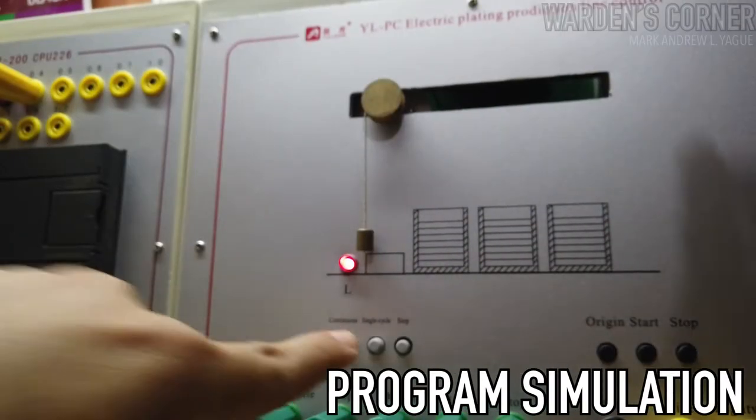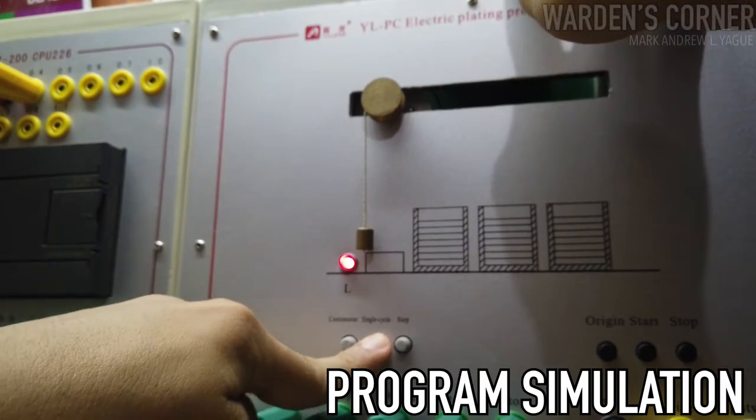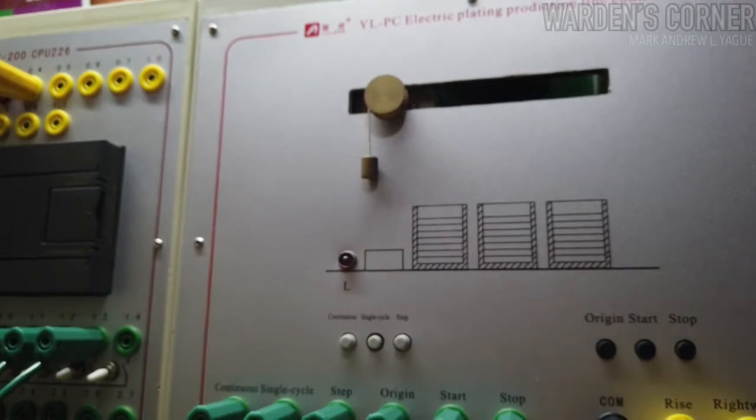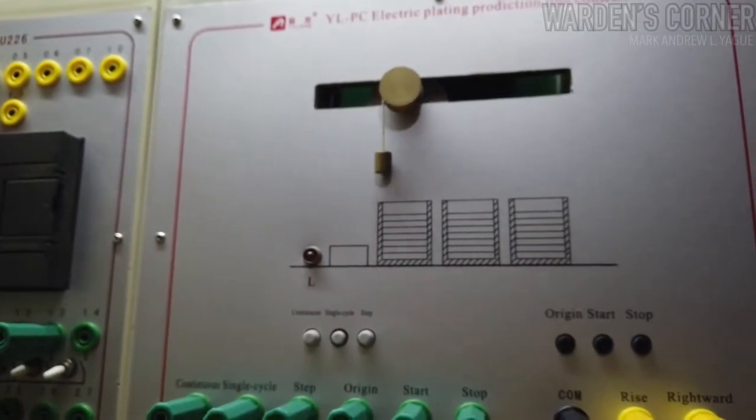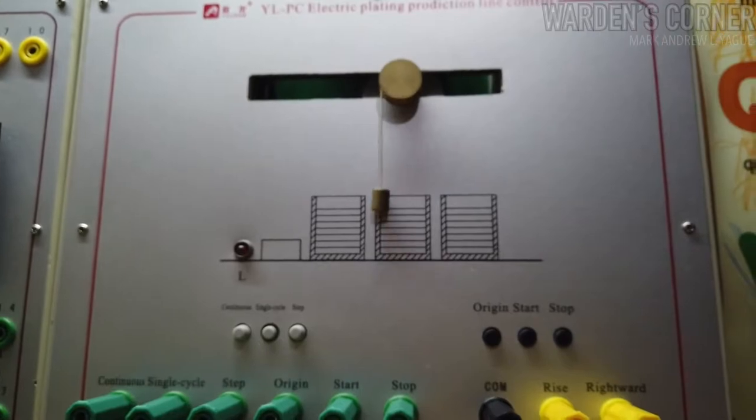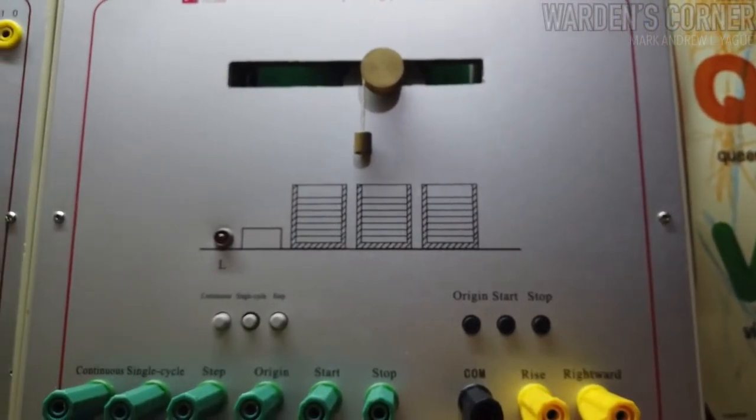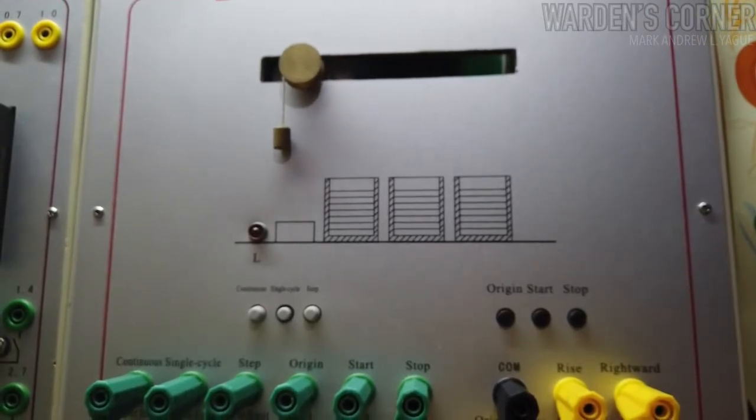How does it work? There are two main operations for this logic program. First, we have a single cycle operation. The workpiece is expected to be dip-dived in each allocated container. After doing so, the workpiece will return to its original location in a single process only.